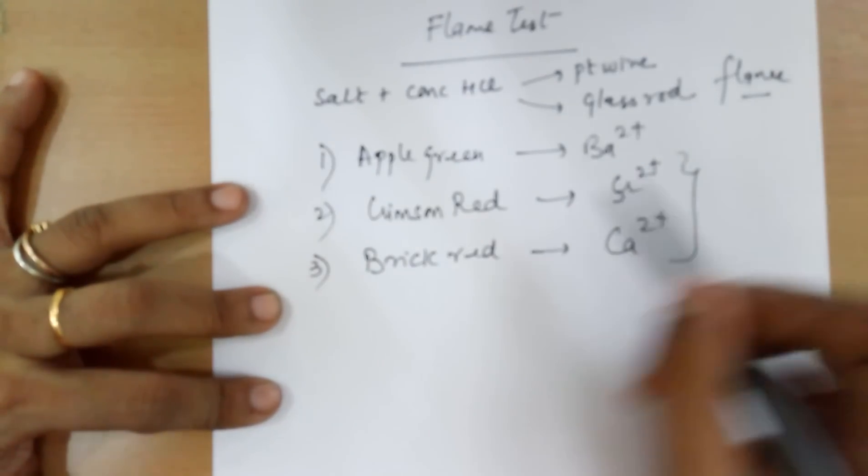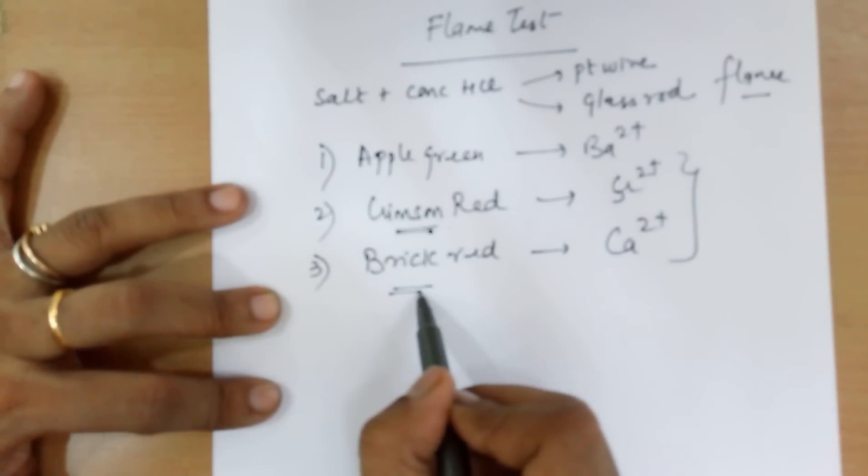There is a slight confusion here. Crimson red is pinkish red. Brick red is orangish red.